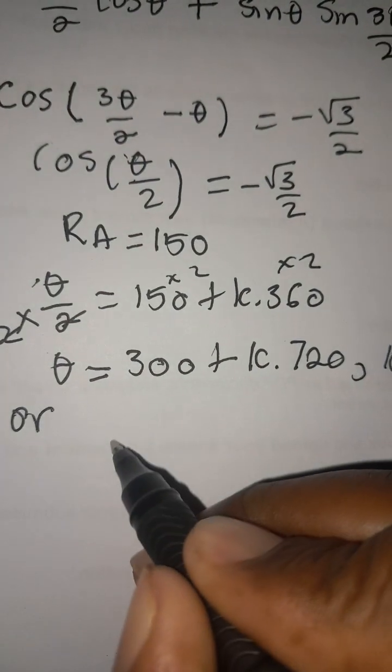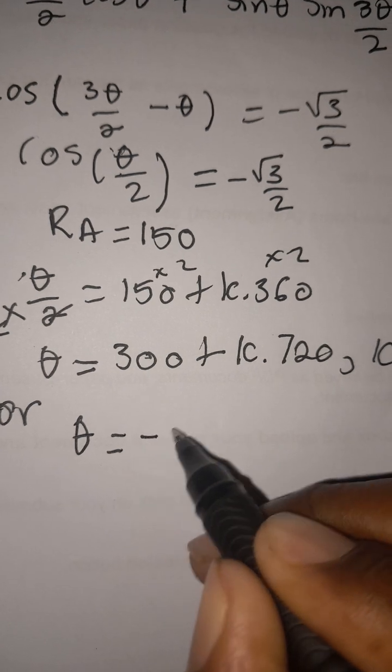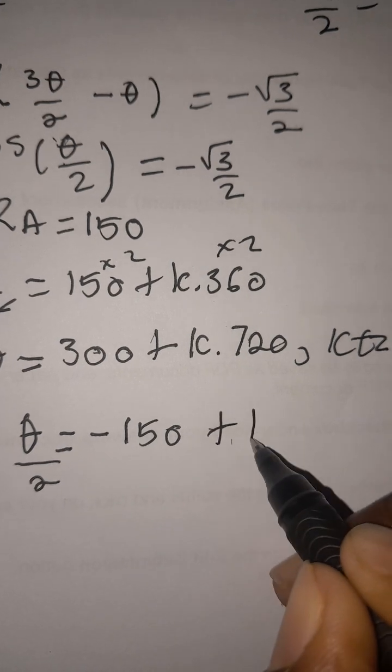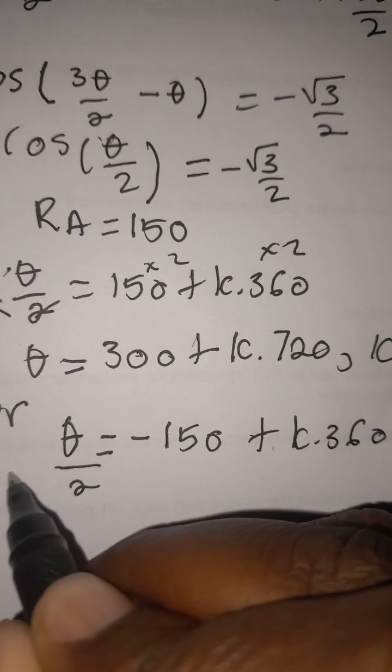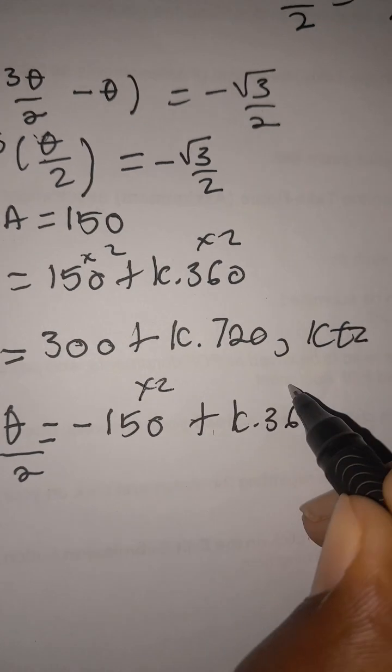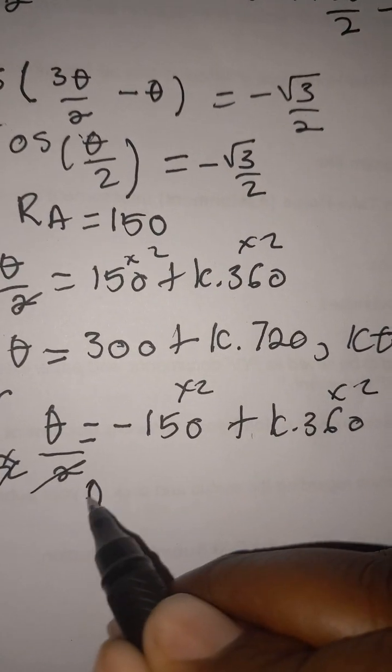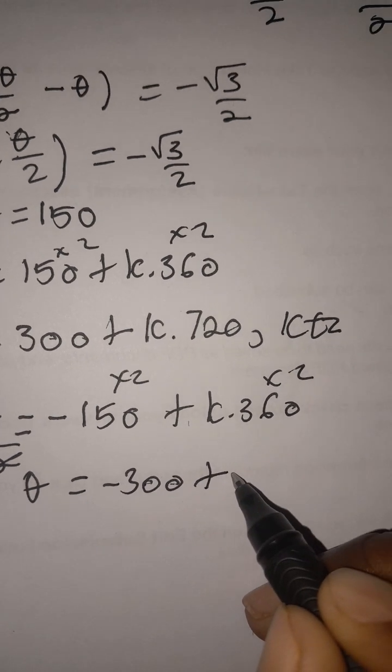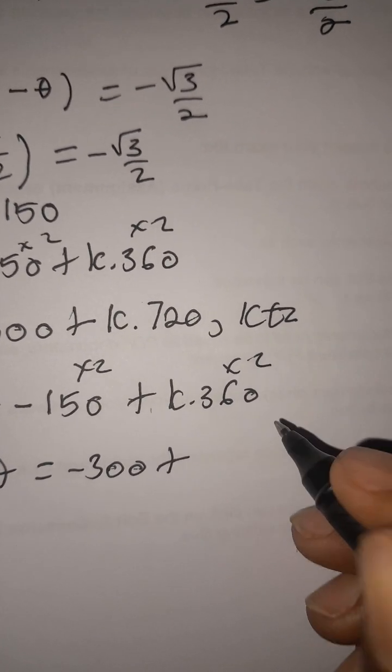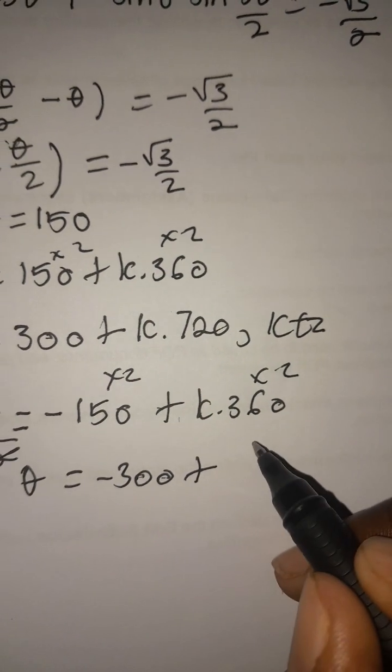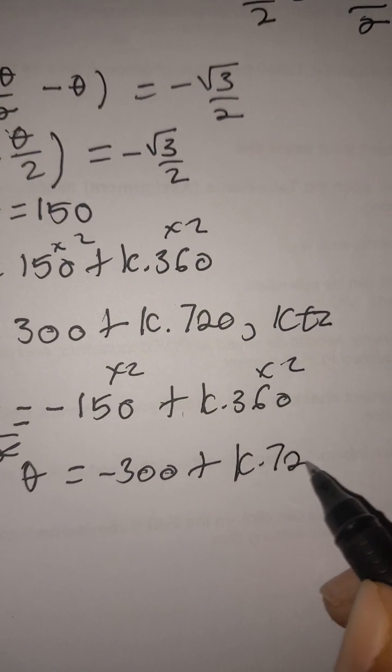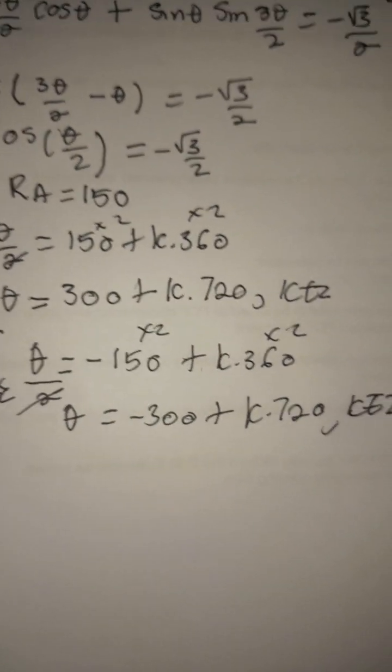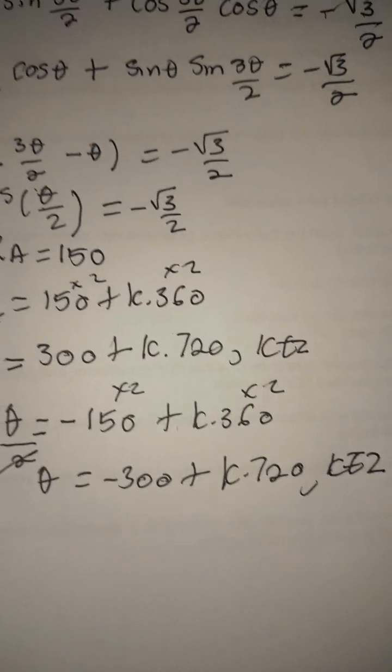The other solution: remember, since it's cos, we must have the one that is negative. So θ/2 will be negative 150 plus k times 360. We multiply by 2 as well. So we are left with theta equals negative 300 plus 720k, where k is an element of integers.